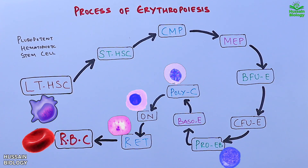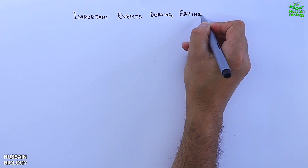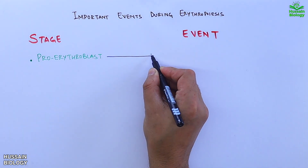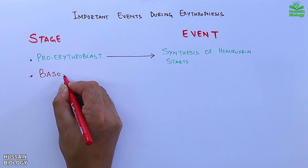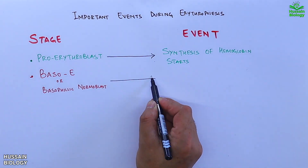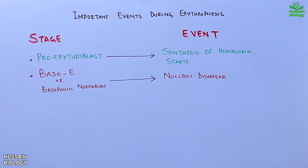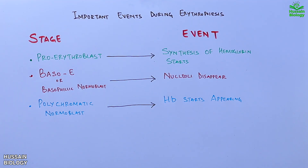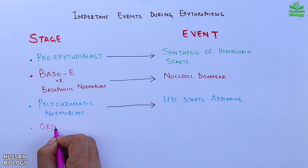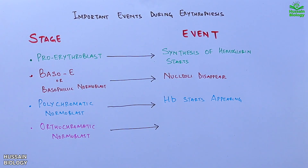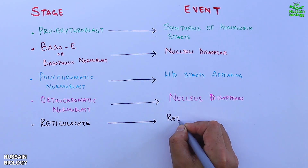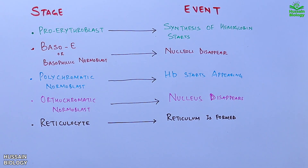Now let's see some important events during erythropoiesis. At the proerythroblast stage, synthesis of hemoglobin starts. At the basophilic stage, the nucleoli disappear. At the polychromatophilic normoblast stage, hemoglobin starts appearing within the cell. At the orthochromic normoblast stage, the nucleus disappears completely. At the reticulocyte stage, the reticulum — a mesh-like network — is formed.